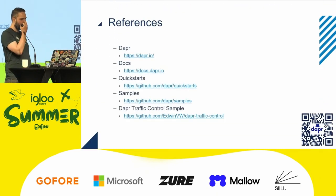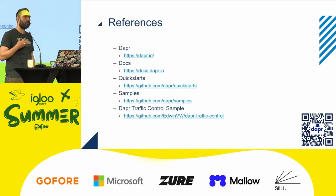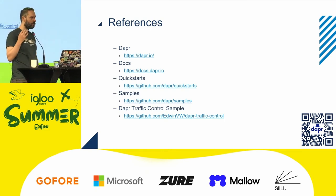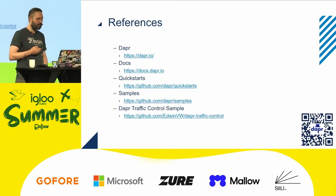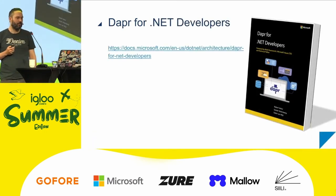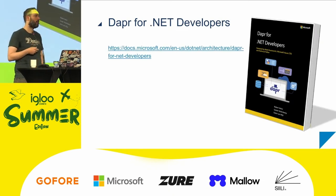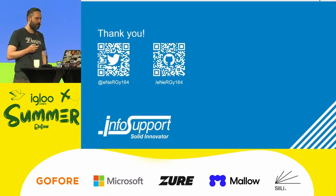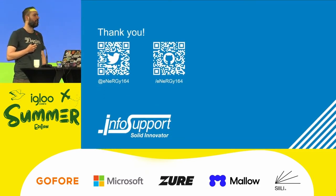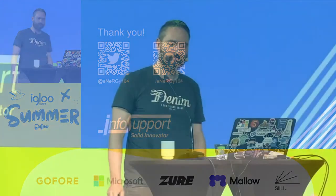Some references I've used: dapr.io is the basic website, docs.dapr.io has all the documentation. On GitHub I used the quick starts, the samples, and the traffic scenario I showed. There is also an e-book written by my colleagues, freely available on docs.microsoft.com, focused on .NET development. With that, I want to thank you very much.